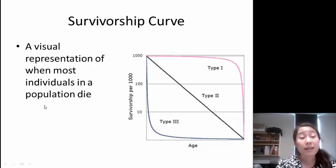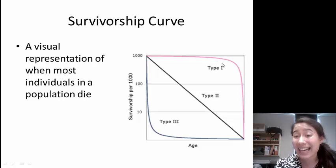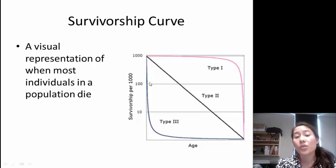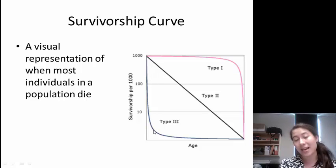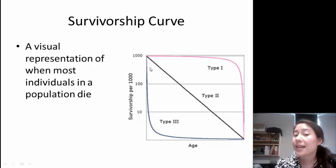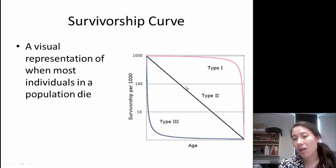A survivorship curve is a visual representation of when most individuals in a population survive or die. There's three types: Type 1, type 2, and type 3, all of which feature the individuals dying at slightly different times. In the type 3 curve there's a sharp decrease, so there's a lot of death at the beginning of life, and then it levels out. In a type 2 curve, death happens about equally all the way through. In a type 1 species, they're most likely to live out through their younger ages, and then there's a lot of death toward the end of life.